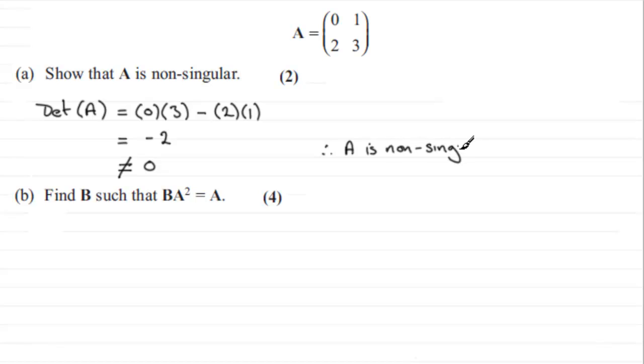All right, now what does that mean if a matrix is non-singular? Well, if the determinant is not equal to 0, it means that the inverse of the matrix A exists. And that's important for the next part of the question.